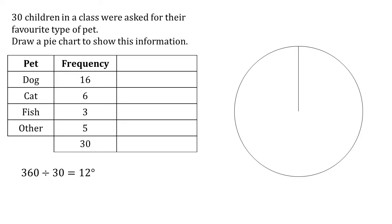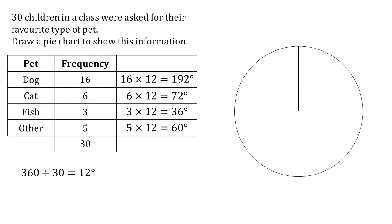Now to work out the size of each sector or each slice of the pie chart, we take the frequency and multiply it by 12. There are 16 children who like dogs, each worth 12 degrees, so 16 times 12 is 192 degrees. For cats, 6 times 12 is 72 degrees. For fish, 3 times 12 is 36 degrees. And for other, 5 times 12 equals 60 degrees.